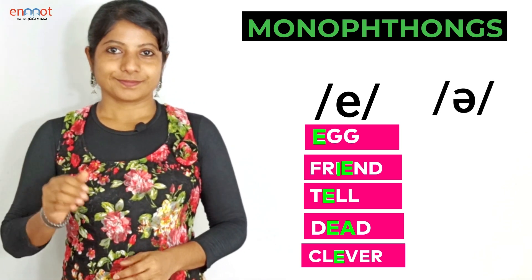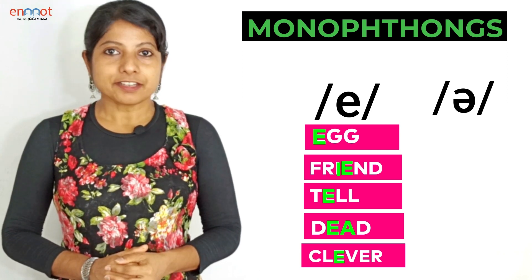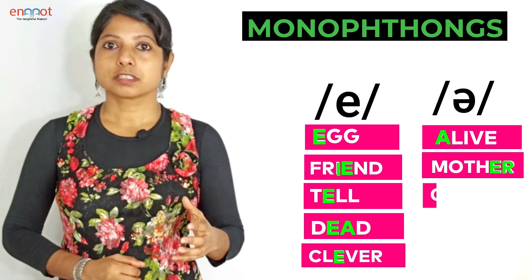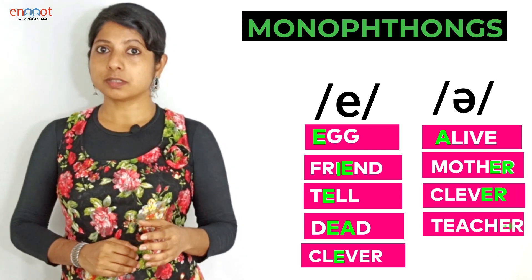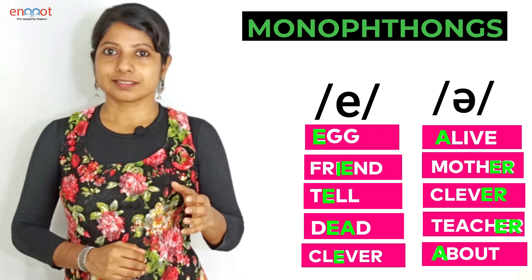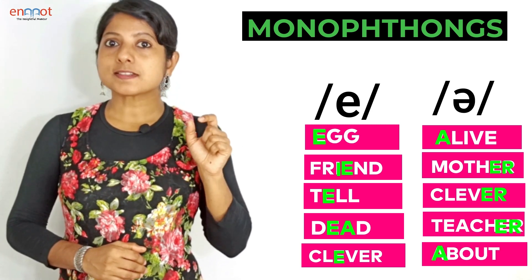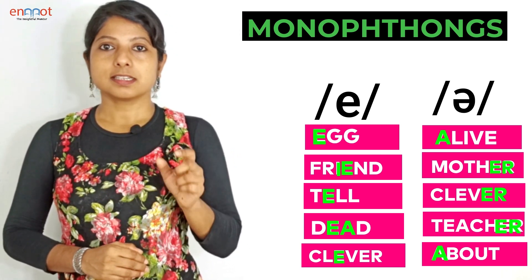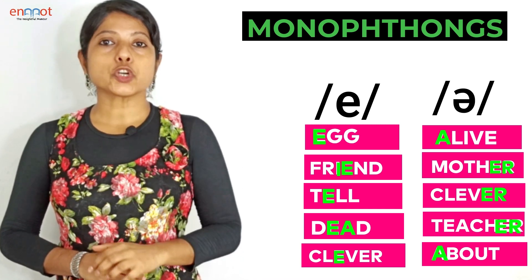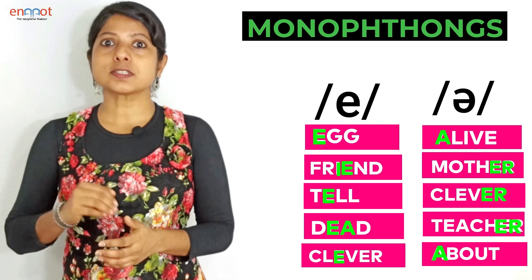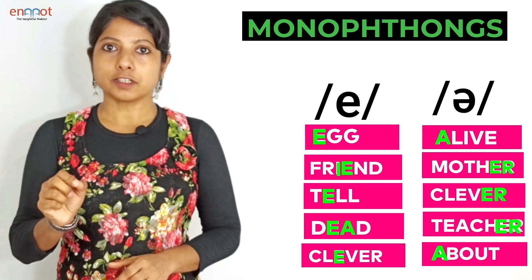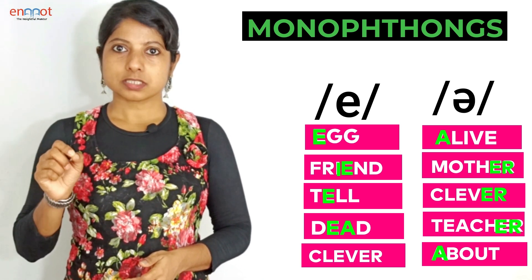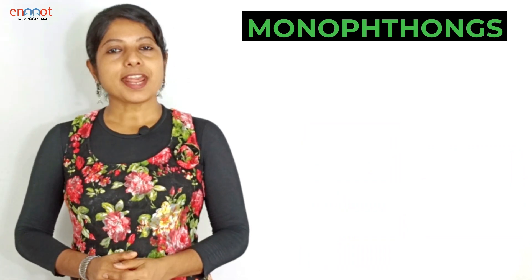The next monophthong is /ə/ — the schwa sound — and the examples are: alive, mother, clever, teacher, about. In 'clever', the ER towards the end of the word produces the sound /ə/. Similarly in mother, teacher, about, and alive the schwa sound /ə/ occurs.